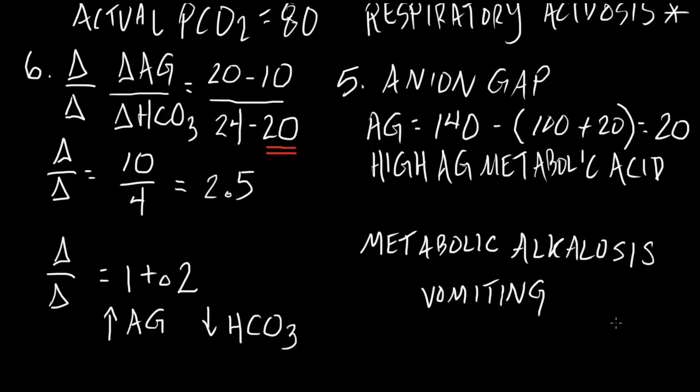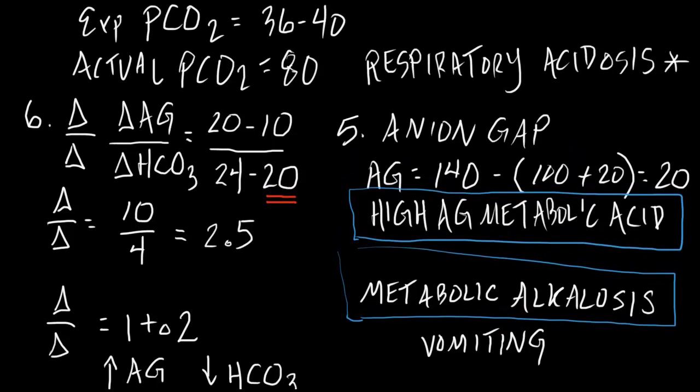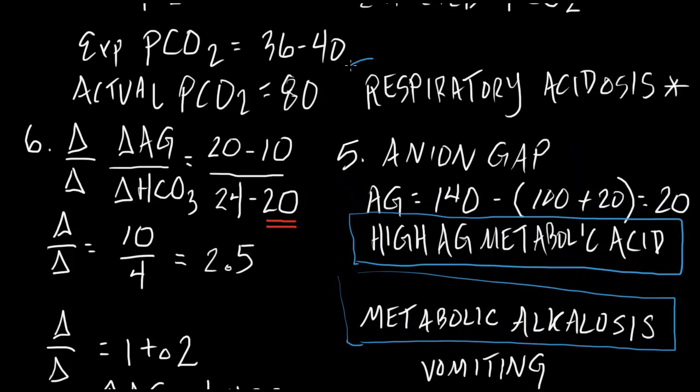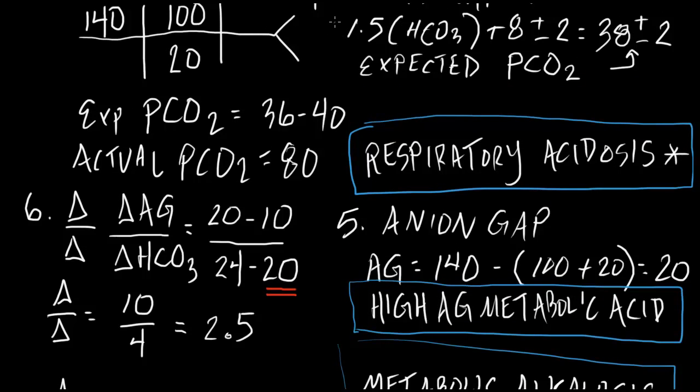So, in this particular case, we have several things. We have a metabolic alkalosis, which we proved using the delta-delta. We have a high anion gap metabolic acidosis, which we proved by calculating the anion gap. And we have a respiratory acidosis, which we determined by using the compensation formula, our Winter's formula here.